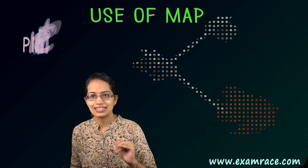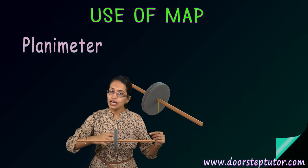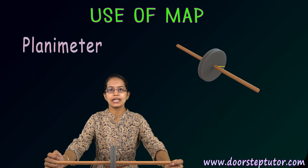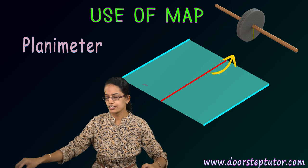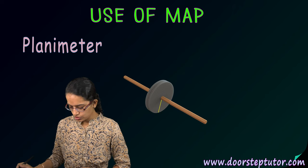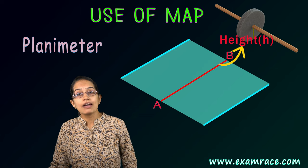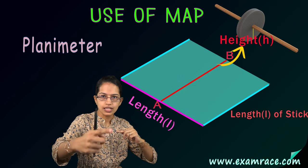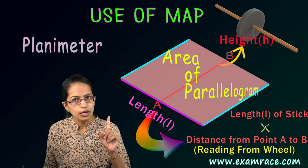The second method for measuring area is the planimeter. The basic concept: I have a stick with a roller or wheel. When I move the roller perpendicular to itself, the wheel traces a certain area — that traced distance is the height of a parallelogram. The area is calculated as the length of rotation the wheel covers multiplied by the length of the stick, giving the area of the parallelogram.